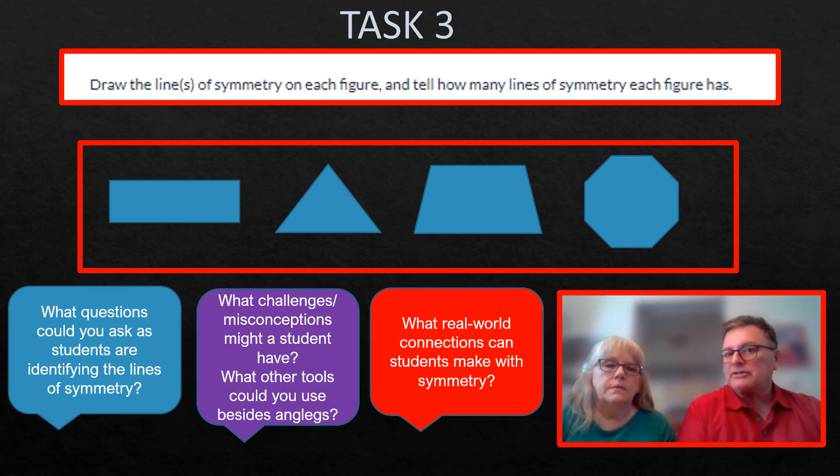Our third task is we are focusing on symmetry. Line symmetry. And there could be multiple lines of symmetry on these shapes here. Let's take a look at that first shape. How would you identify it? It's a rectangle. And if I'm talking about symmetry, I'm either going to use like a mirror or folding. Something where I can physically see that the two halves are identical and meet one another. And I like what you said. They built them with anglegs.